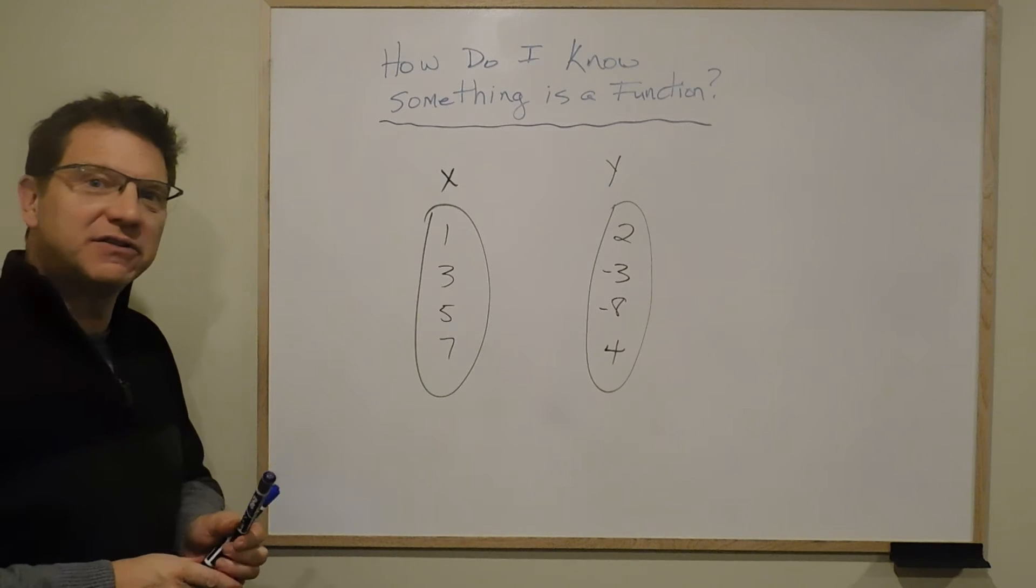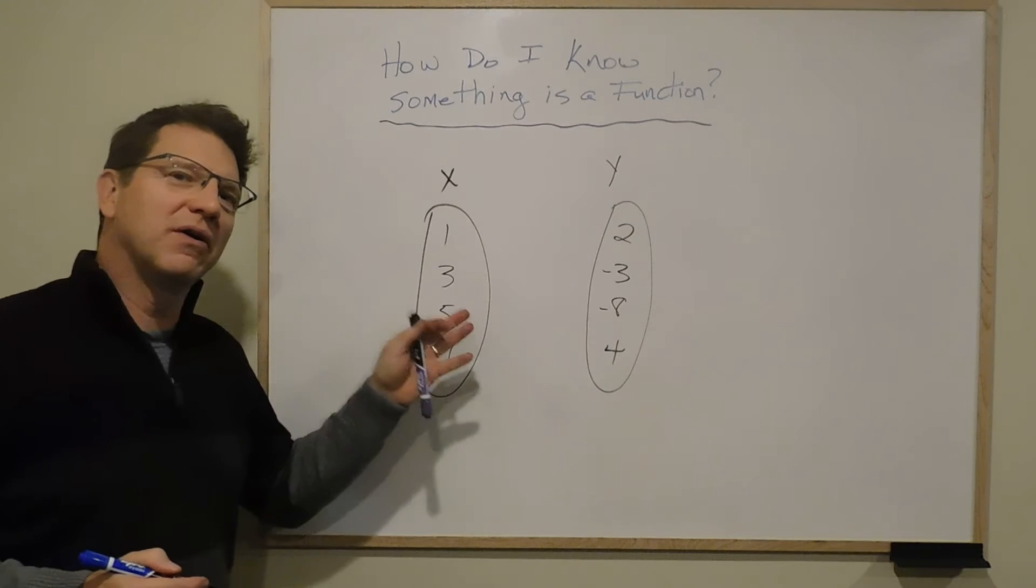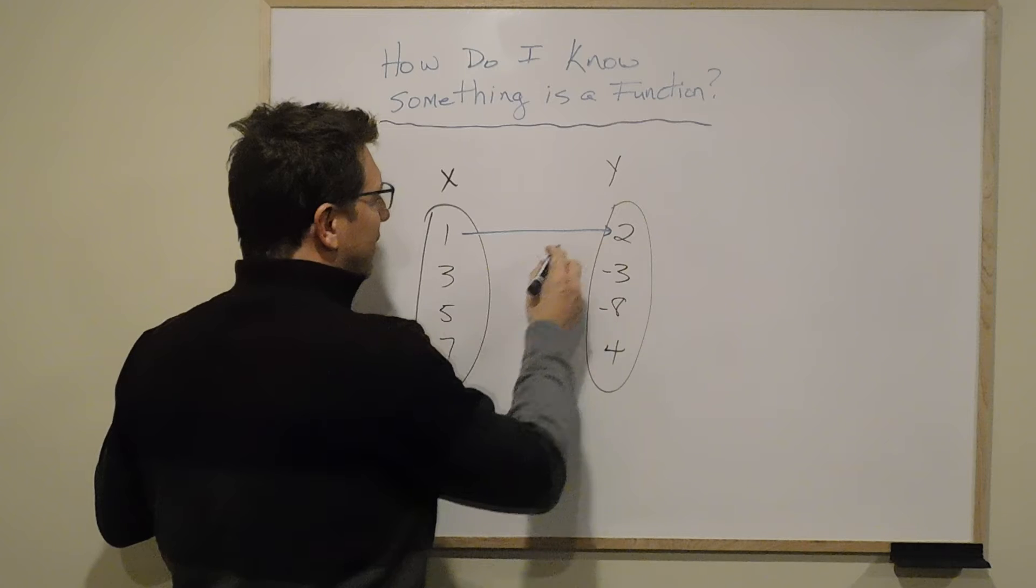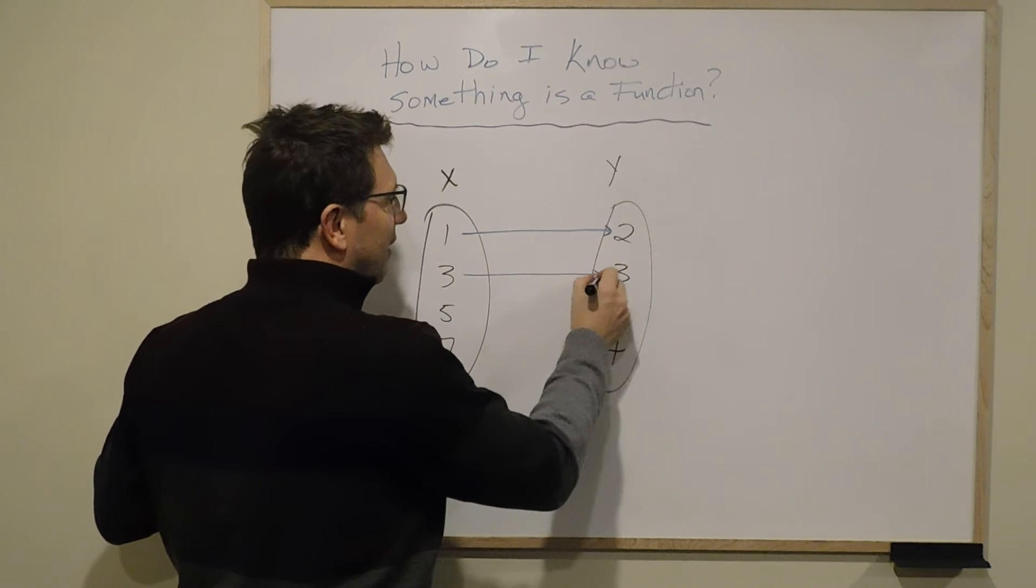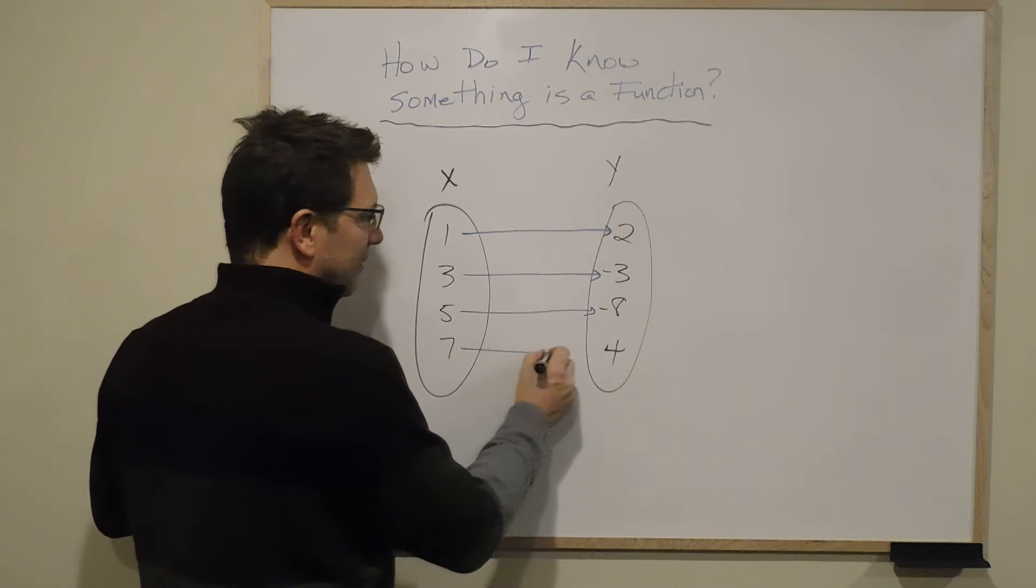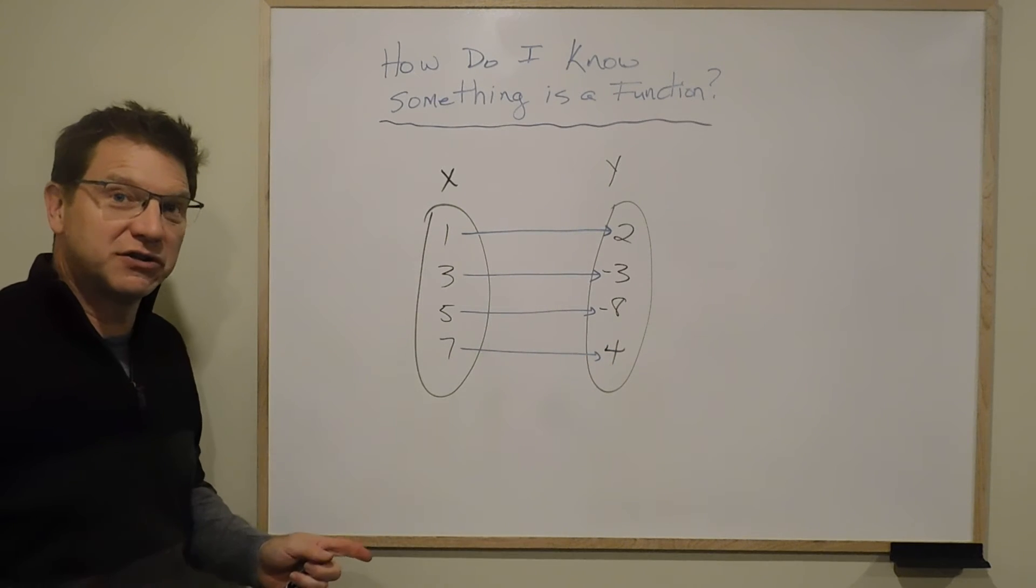Now this is a function because each x value has exactly one y value. So visually, this x value has one y value, this x value has one y value, this x value has one y value, and that x value has one y value. So that is a function.